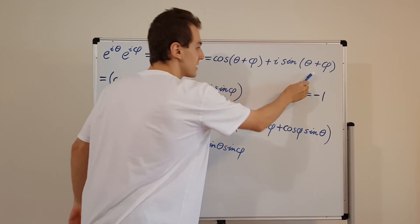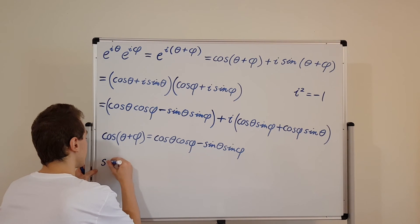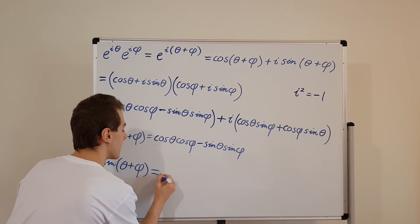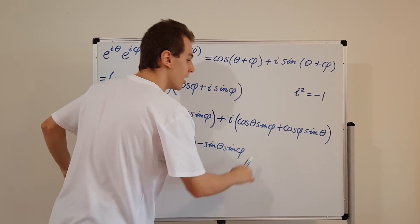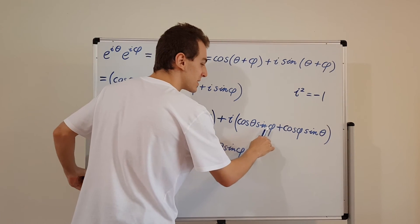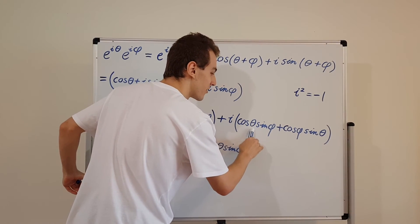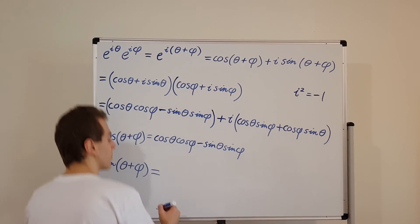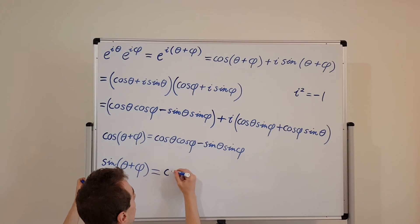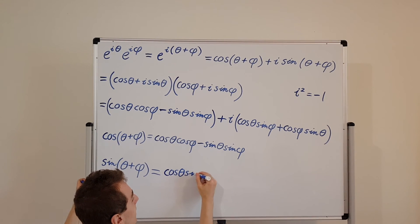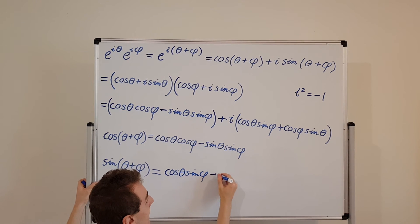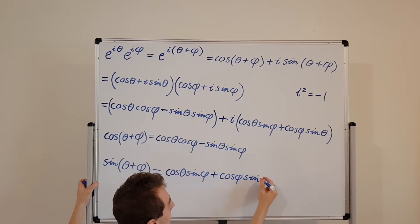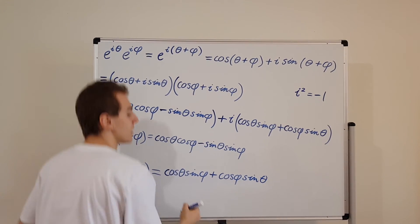Matching the imaginary components gives us our second trigonometric identity: sine of theta plus phi equals cosine theta times sine phi plus cosine phi times sine theta.